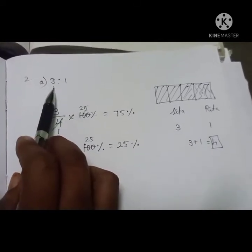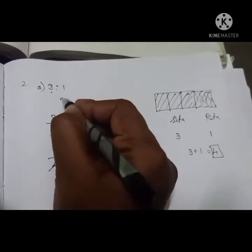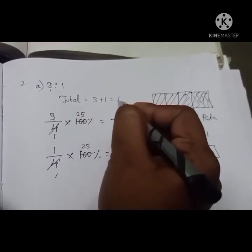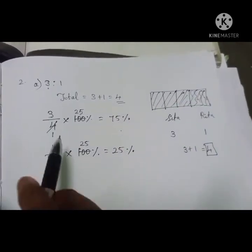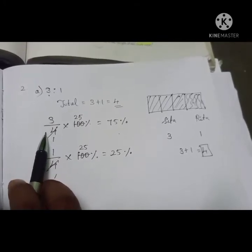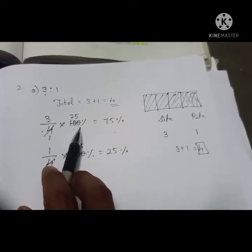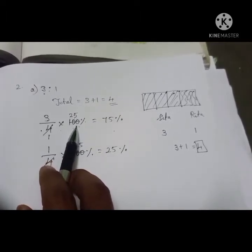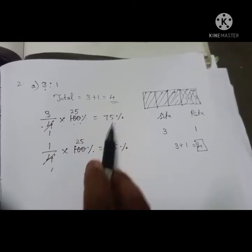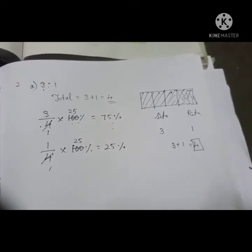So to convert a ratio into percentage: first find the total parts, then write each part over the total, and multiply by 100. Here, 3 by 4 into 100 equals 75 percent, and 1 by 4 into 100 equals 25 percent.